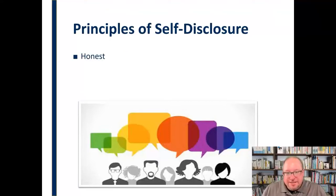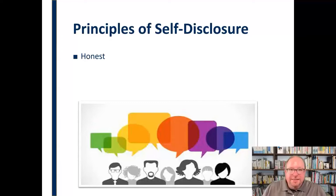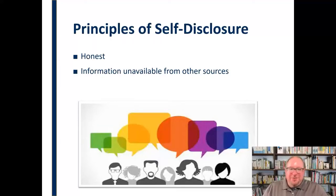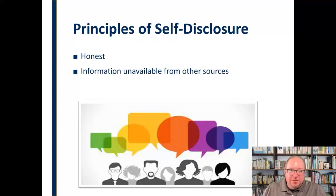In addition, self-disclosure has to be honest. It's not self-disclosure if you're telling somebody something that's not true. It also has to be information unavailable from other sources. It's not really self-disclosure for me to say I wear glasses or I'm going a little bald — those things are readily apparent. Or if I'm somebody famous, it wouldn't be self-disclosure to say I'm an actor or an athlete if you already knew that.